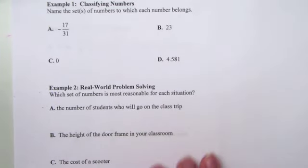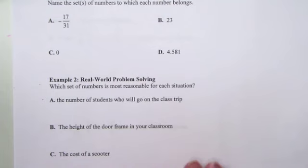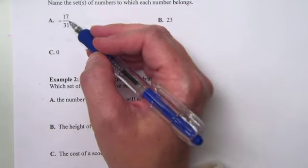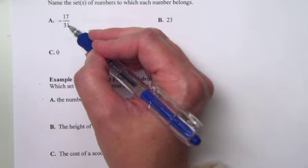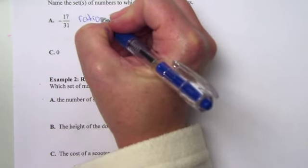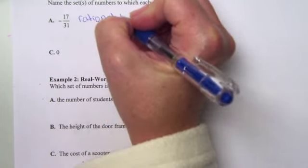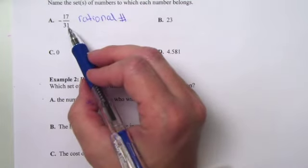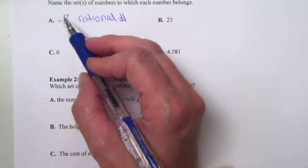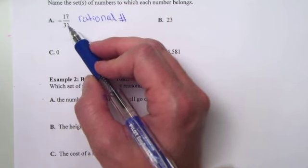Looking at Example 1, it says classifying numbers — name the set of numbers to which each number belongs. We have the number negative 17 over 31. Because this is in the form A over B and both the top and the bottom are integers, it's not a whole number, it's not an integer — it is a rational number because it is written in the form A over B and both the top and bottom are integers.